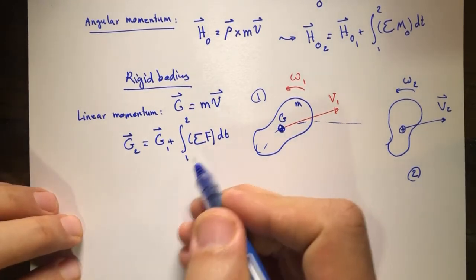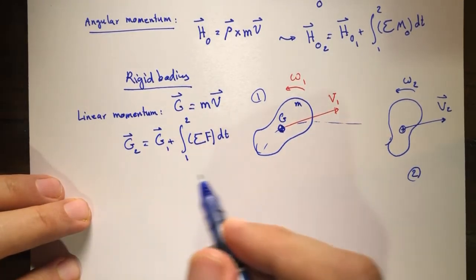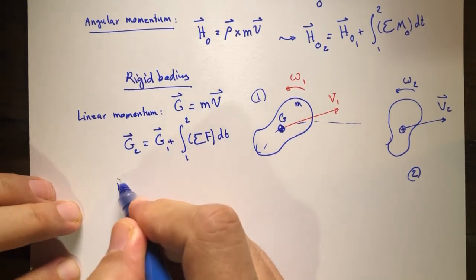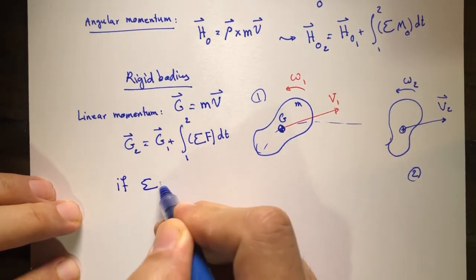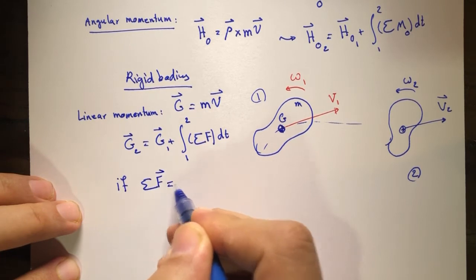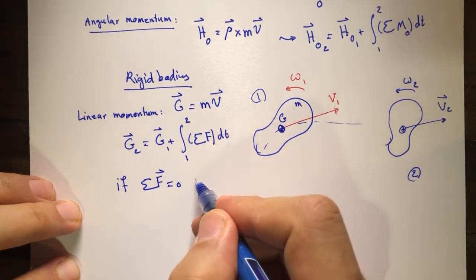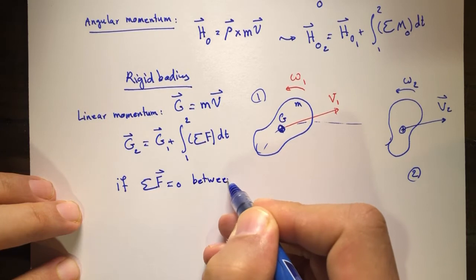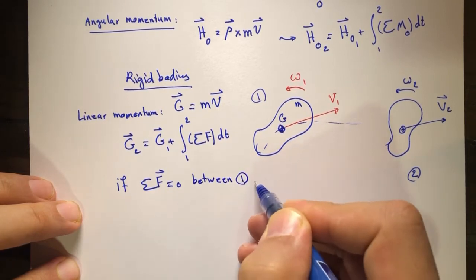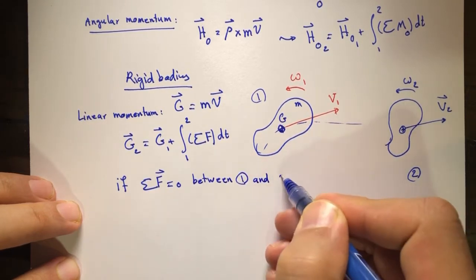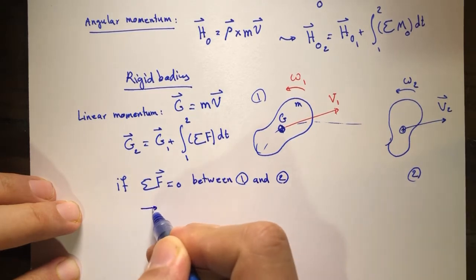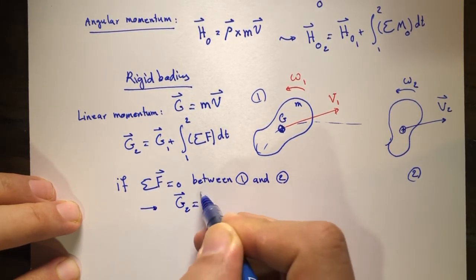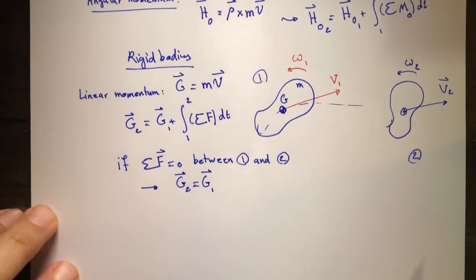Sometimes the sum of the forces on the rigid body or system of rigid bodies is equal to zero. If the sum of forces is equal to zero between positions one and two, then we have g2 equal to g1 — conservation of linear momentum.